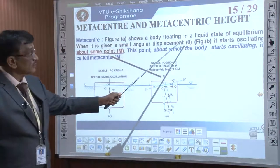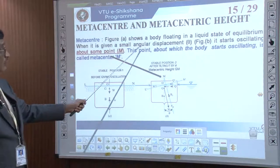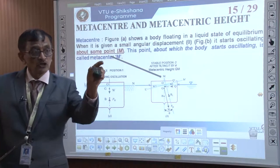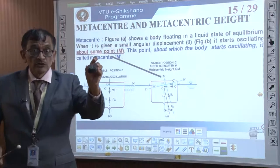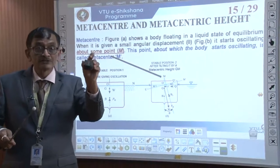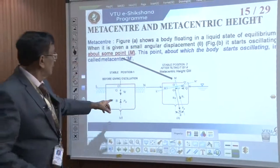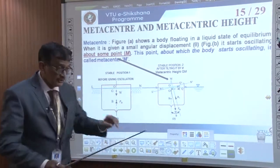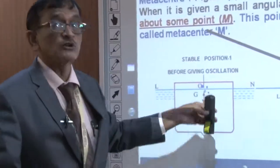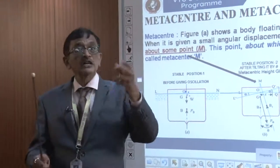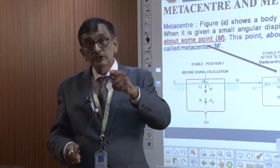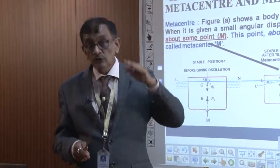Figure A shows a body floating in a liquid in a state of equilibrium, where it is given a small angular displacement. Assume this is a boat and I am giving it a small inclination — it will oscillate and come back. When you board a boat it tilts slightly and comes back; that is stable equilibrium. I would like to know: if I tilt the boat, will it come back or will it collapse? You may have seen in movies that at a certain angle of tilt, the boat falls. That angle of tilt is what we want to understand.